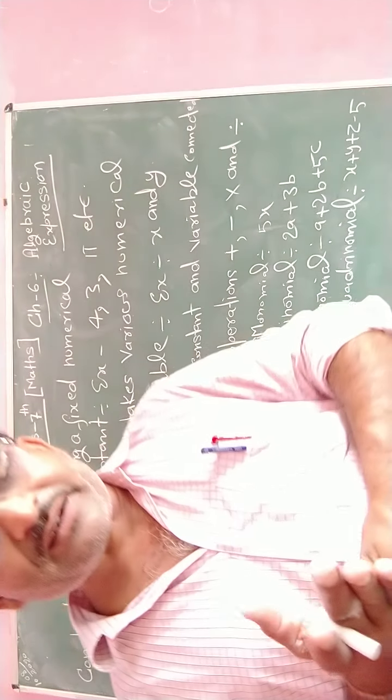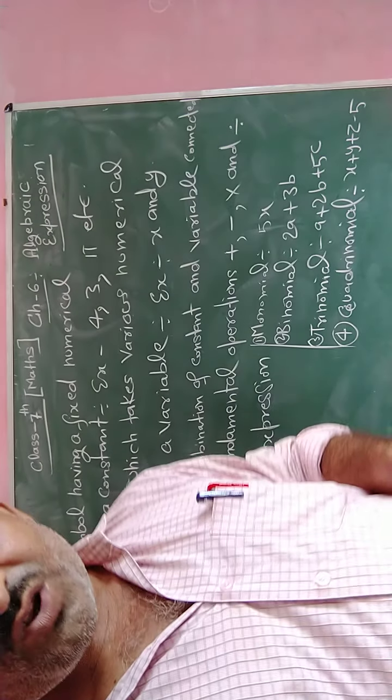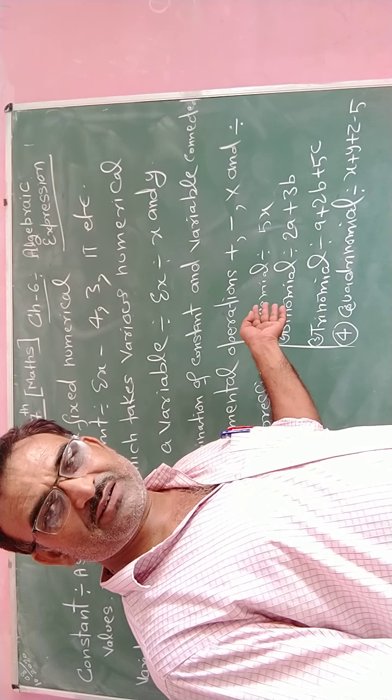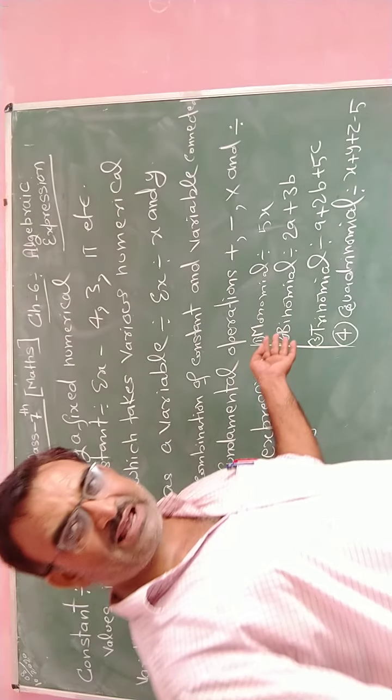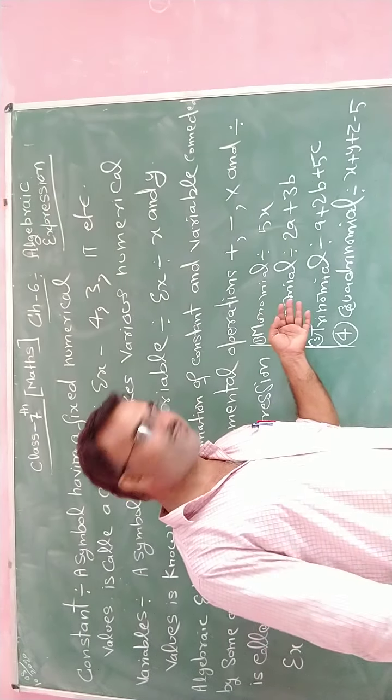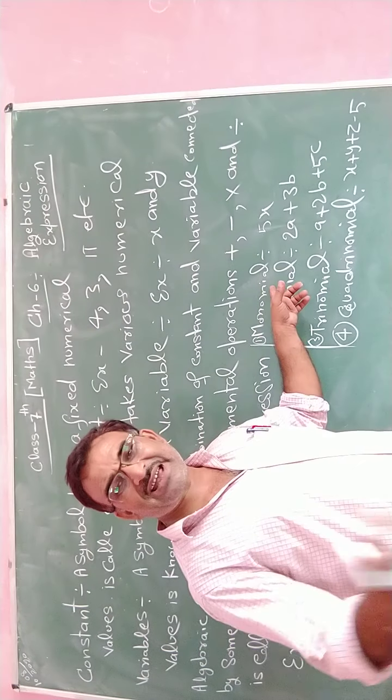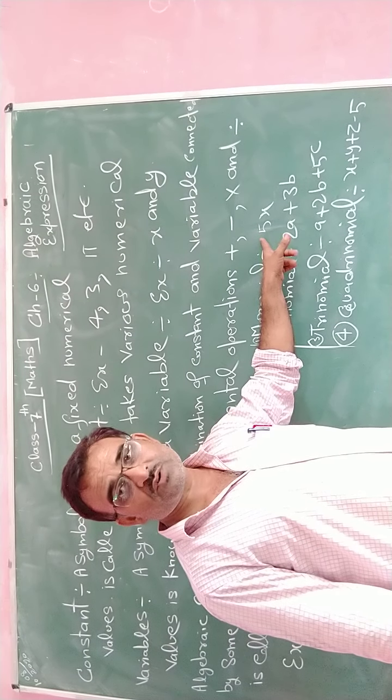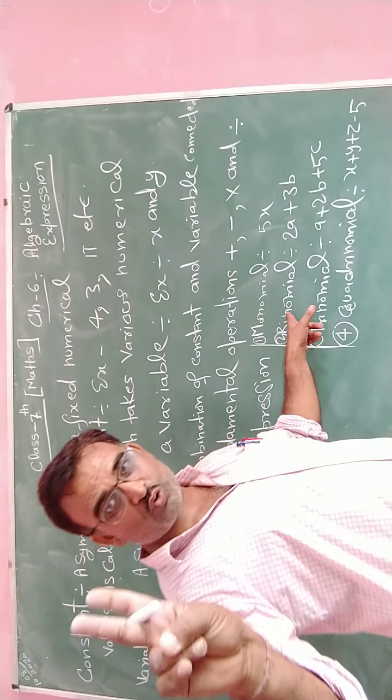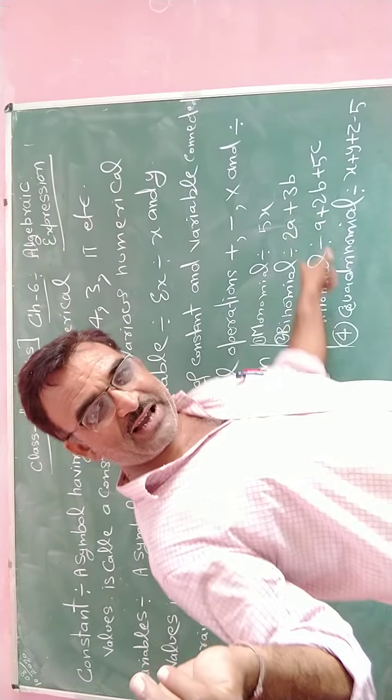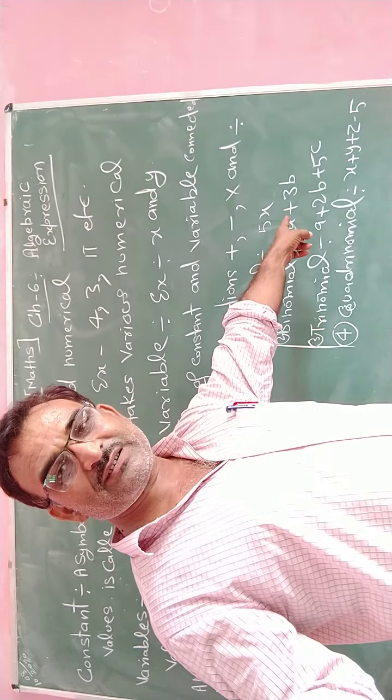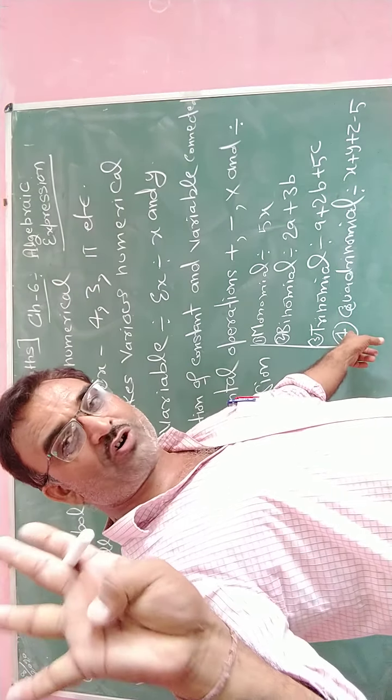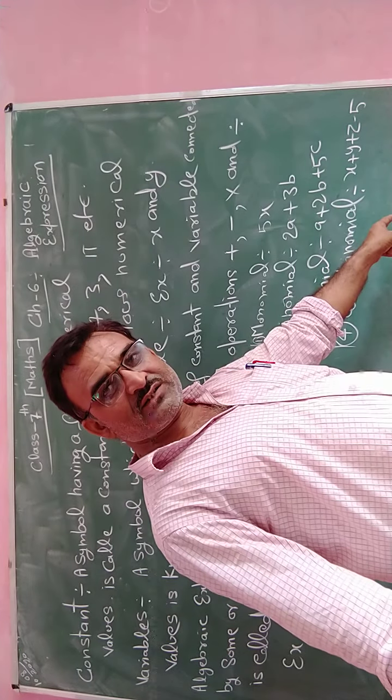Now, types of algebraic expressions. There are 4 main types of algebraic expressions. First, monomial. An algebraic expression which has a single term is called monomial. An algebraic expression which has two terms is called binomial. An algebraic expression which has three terms is called trinomial. And an algebraic expression which has four terms, that is called quadrinomial.